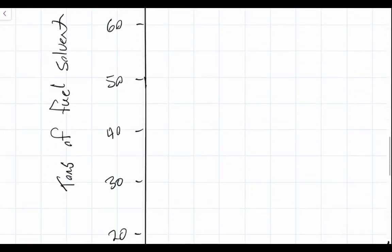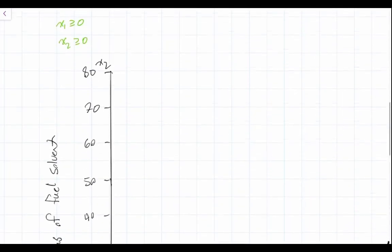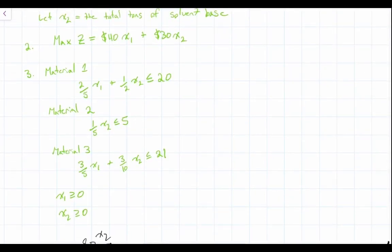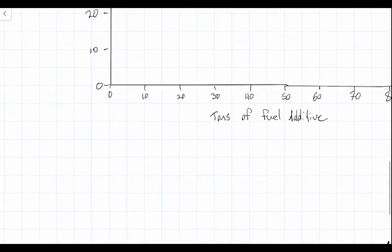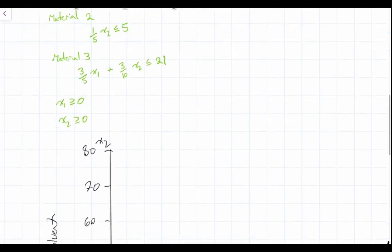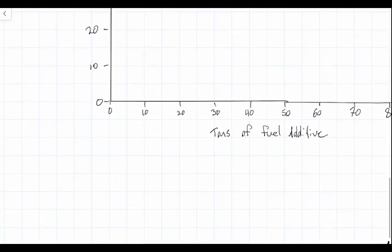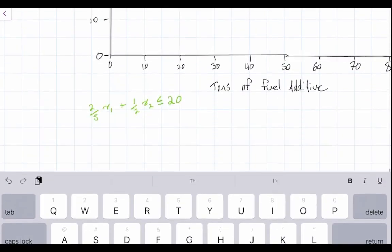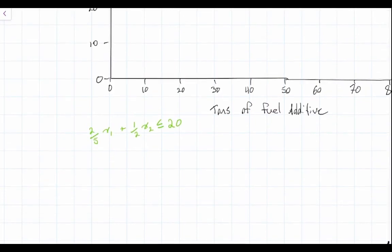We are going to plot our constraints along the graph. Let's look at our first constraint. For material one — solved in the previous video — our first constraint is: two-fifths x1 plus one-half x2 must be less than or equal to 20. We are now going to solve for our x1 and x2 intercepts so that we can plot a line along our graph.